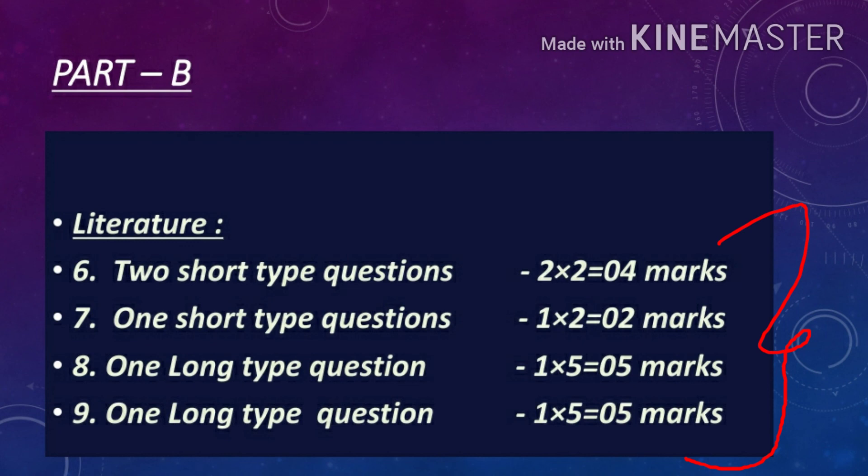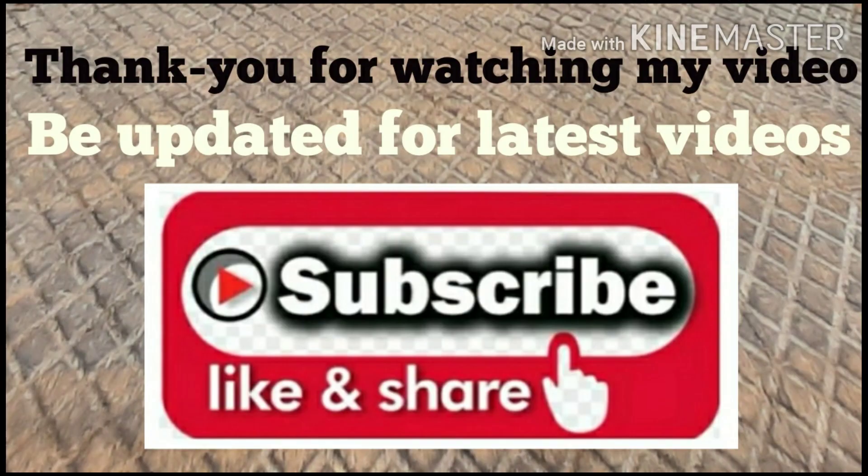Question number 9 is one long type question from your Snapshots book. You have to answer in 120 to 150 words. There will be two questions in which you have to answer only one. In long answer questions, any incident from a chapter can be given and you have to discuss, comment, or briefly describe about the event.